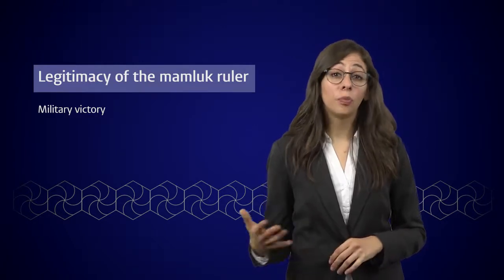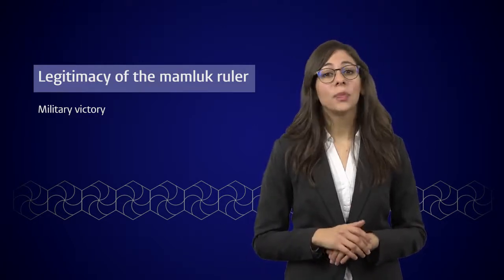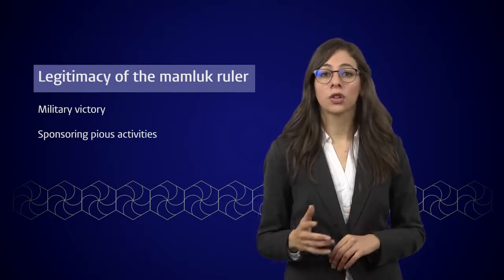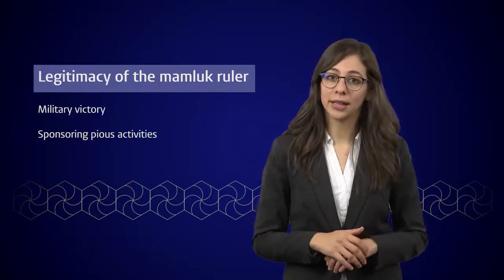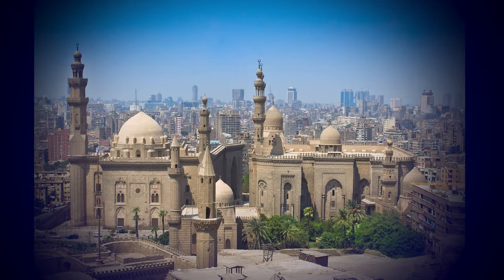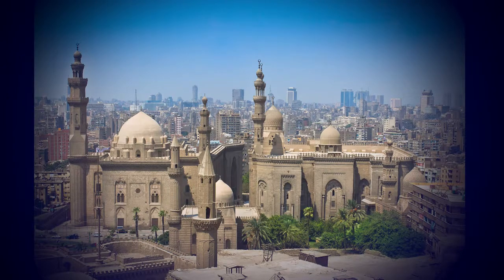Another way of boosting their legitimacy was by sponsoring pious activities through the construction of mosques and other religious buildings. Some of this Mamluk heritage with clear Turkic influence can still be admired in Cairo.